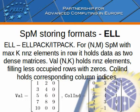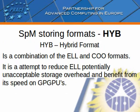ELL format: for an N by M sparse matrix with maximum K non-zero elements in a row, ELL holds data as two dense matrices. A value matrix of size N by K holds non-zero elements, filling in less occupied rows with zeros, while the column index matrix holds corresponding column indexes. ELL is usually three times faster than COO format, but it is much more memory consuming. The Hybrid format is a combination of ELL and COO formats, which reduces ELL's potentially unacceptable storage overhead and benefits from high speed on GPGPUs.